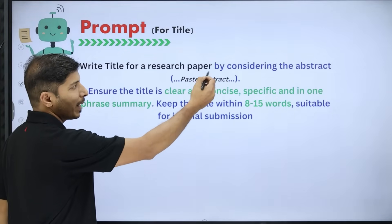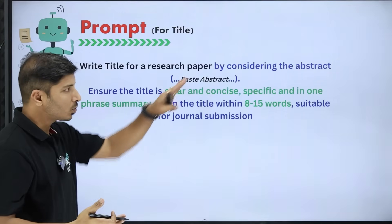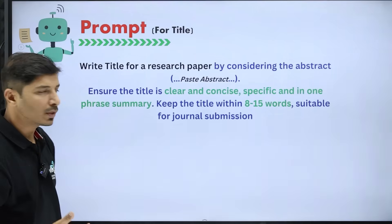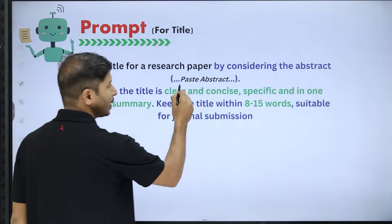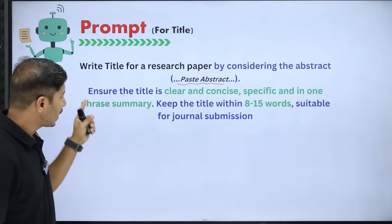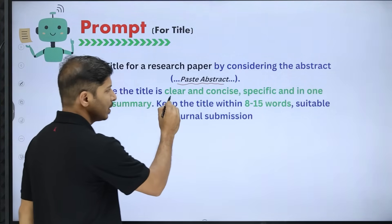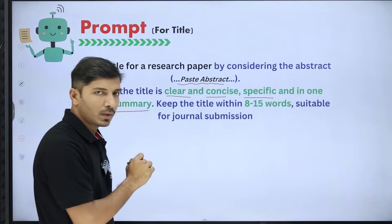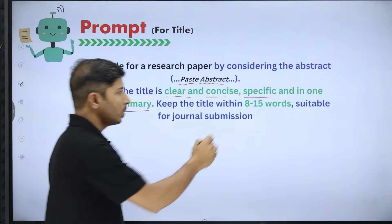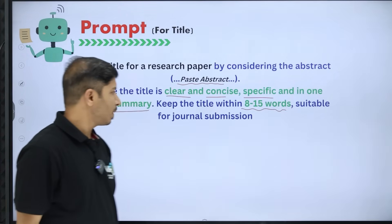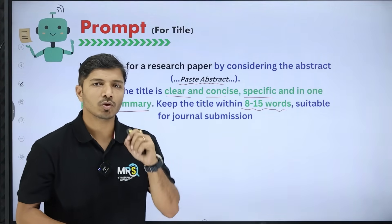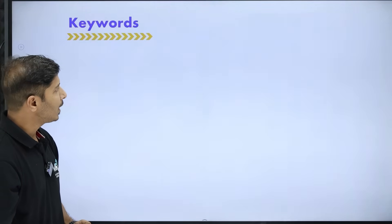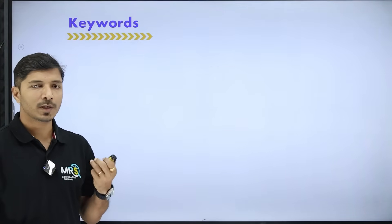To write the title using ChatGPT, use this prompt: 'Write a title for a research paper by considering the abstract.' Paste the generated abstract here. Then mention: ensure the title is clear, concise, specific, in one phrase summary, and within the appropriate number of words suitable for journal submission. You can also modify this prompt if you want to include any other specific information in your title.